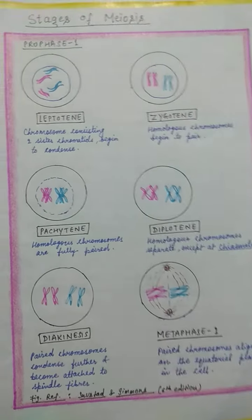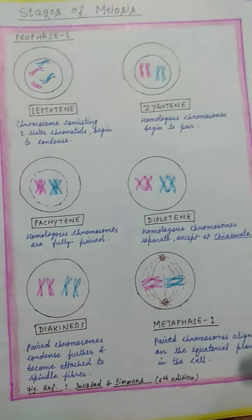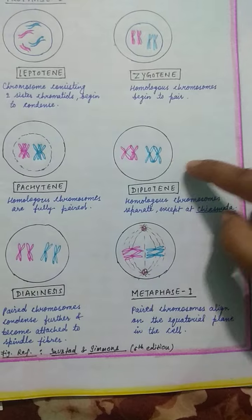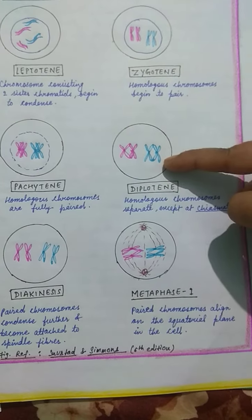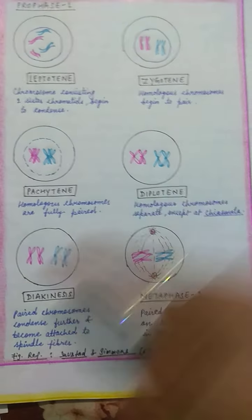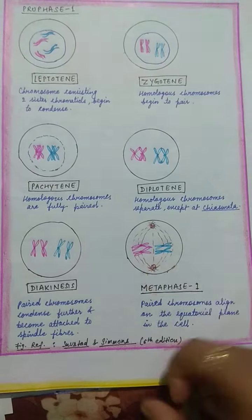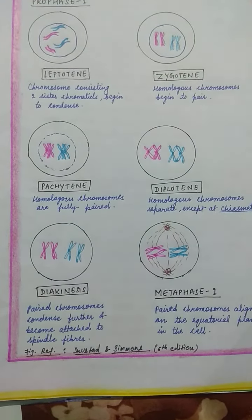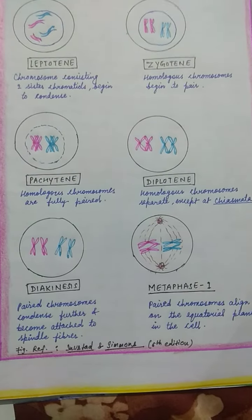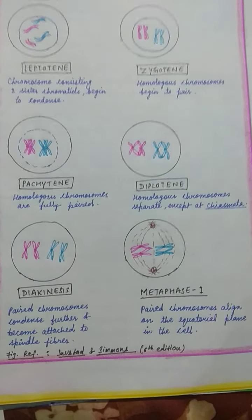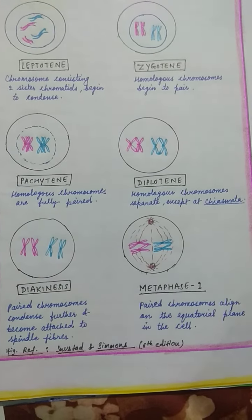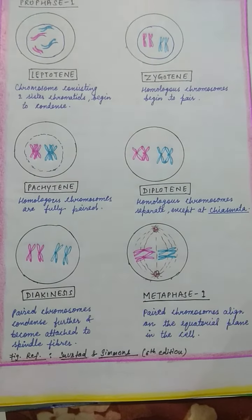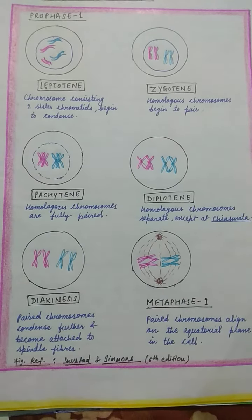In pachytene, crossing over begins. In diplotene, crossing over ends. In diakinesis, terminalization occurs — crossing over and exchange of genetic material is complete, and chromosomes are separated as the cell enters metaphase-1. In metaphase-1, chromosomes are aligned at the equatorial position, but unlike mitosis, it is homologous chromosomes — not sister chromatids — that separate.